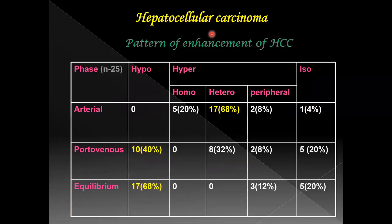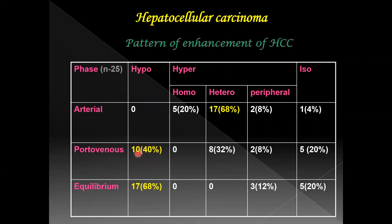Hepatocellular carcinoma was seen in 25 patients. The most common pattern of enhancement in the arterial phase was heterogeneous, seen in 68% of patients. In the portal venous and equilibrium phases, hypo-enhancement was the most common pattern, seen in 40% in the portal venous phase and 68% in the equilibrium phase.